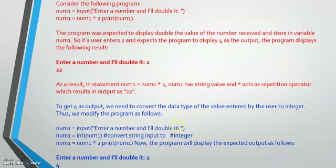Now look at this: the variable num1 takes input 'enter a number and I will double it,' same as before, but then we use int(num1) to convert the input to integer. When we convert it to an integer, the star then acts as multiplication, and doubling 2 gives 4. This is why we use type conversion to get the required result. There are two different situations here — type 1 and type 2.